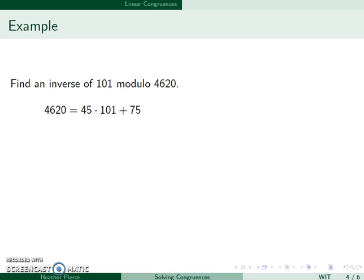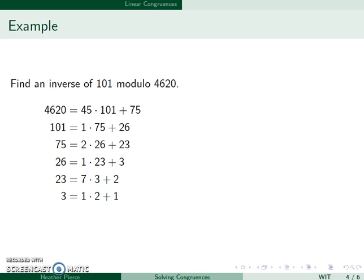We'll now do 101 divided by 75, which is 1 with a remainder of 26. 75 divided by 26 is 2 with a remainder of 23. 26 divided by 23 is 1 with a remainder of 3. 23 divided by 3 is 7 with a remainder of 2. And then 3 divided by 2 is 1 with a remainder of 1. This is what we're looking for, this remainder of 1.